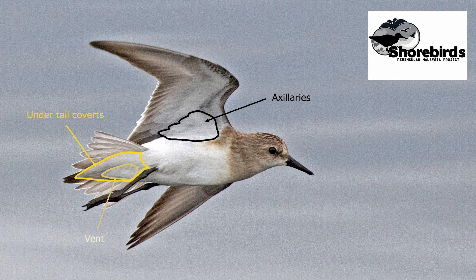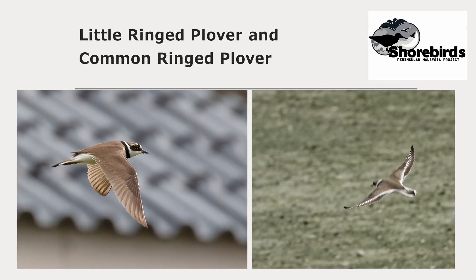I want to finish by giving you an idea of how useful noticing where patterns are on flying birds can be, so let me show you a few examples. Here's a Little Ringed Plover on the left and a Common Ringed Plover on the right. These can look pretty similar when they're on the ground but they are very different in flight. Notice on the left the almost plain brown upper wing of the Little Ringed Plover, and on the right the broad white wing bar on the Common Ringed Plover, which is formed by white tips to the greater coverts and white bases to the secondaries and primaries.